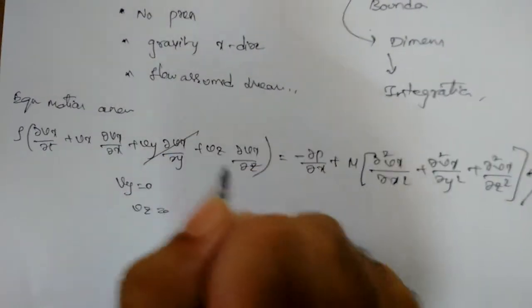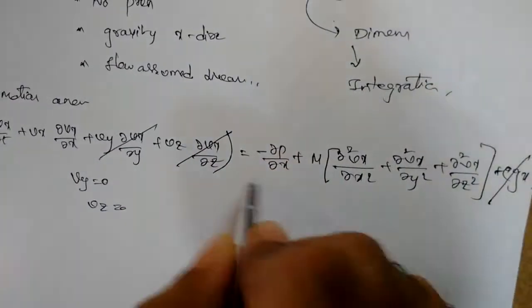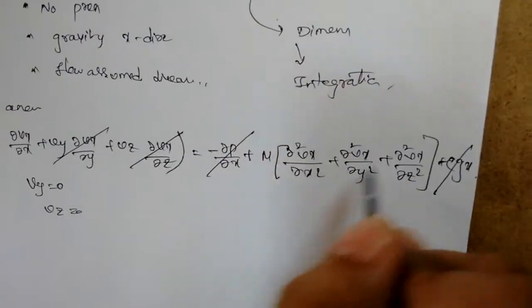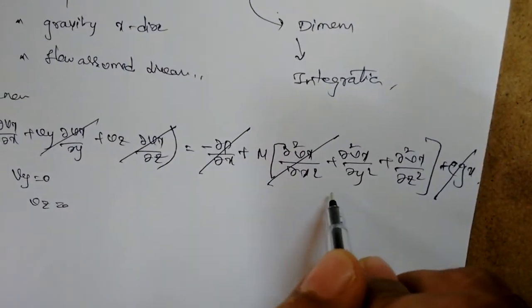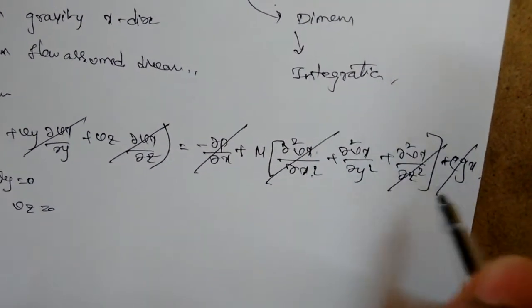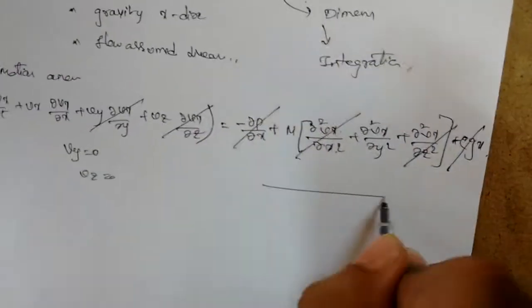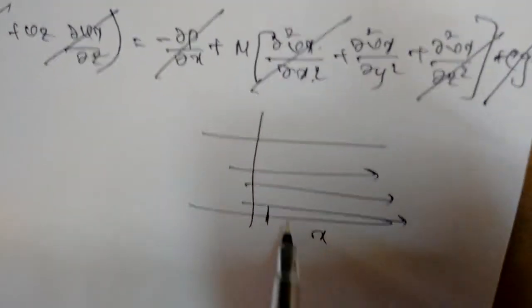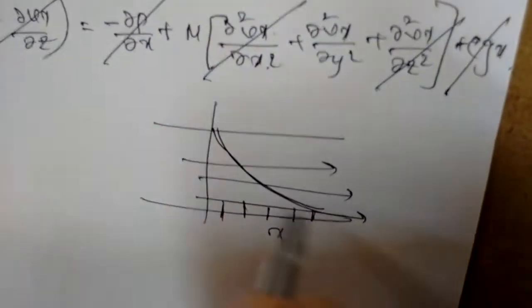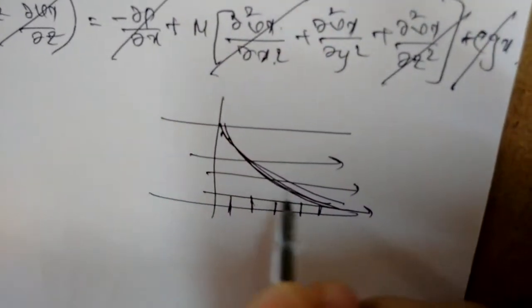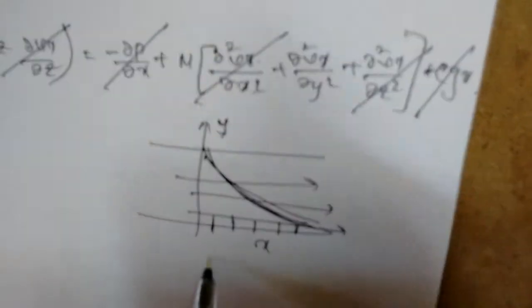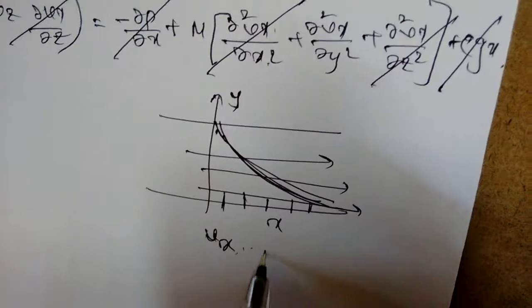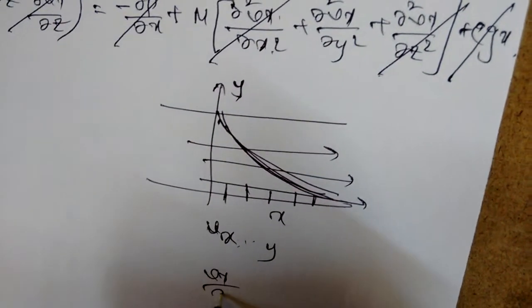We cancel the vy and vz terms. Pressure is constant. Since flow is in the x-direction and vx varies with y only (not x or z), ∂vx/∂x = 0 and ∂vx/∂z = 0. The flow vx is changing with respect to y, not x, so ∂vx/∂x = 0.